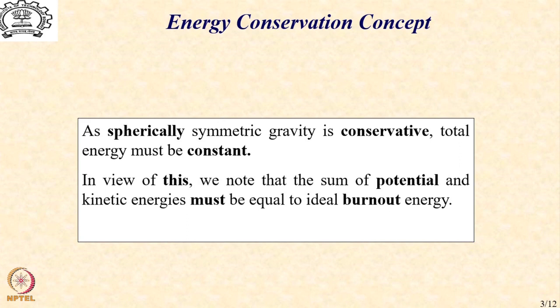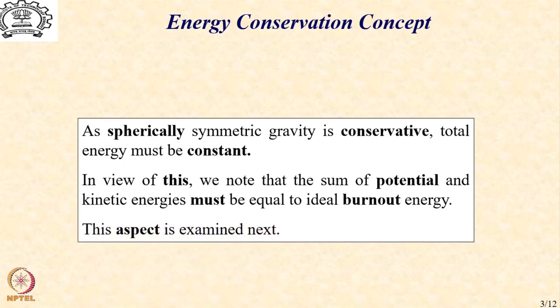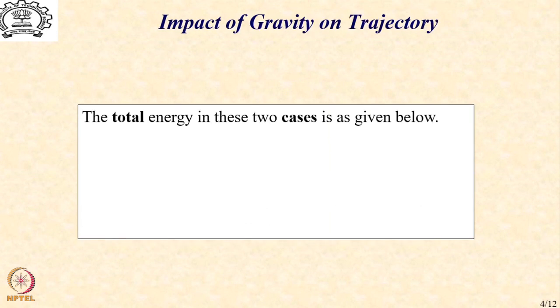In view of this, we hypothesize that the effect of gravity is not really something we should worry about. The loss in velocity probably appears as a gain in altitude so that the total mechanical energy is the same and must equal the ideal burnout energy. Let us examine this aspect by calculating the total energy in the two cases: the ideal burnout and the burnout under the constant gravity model.